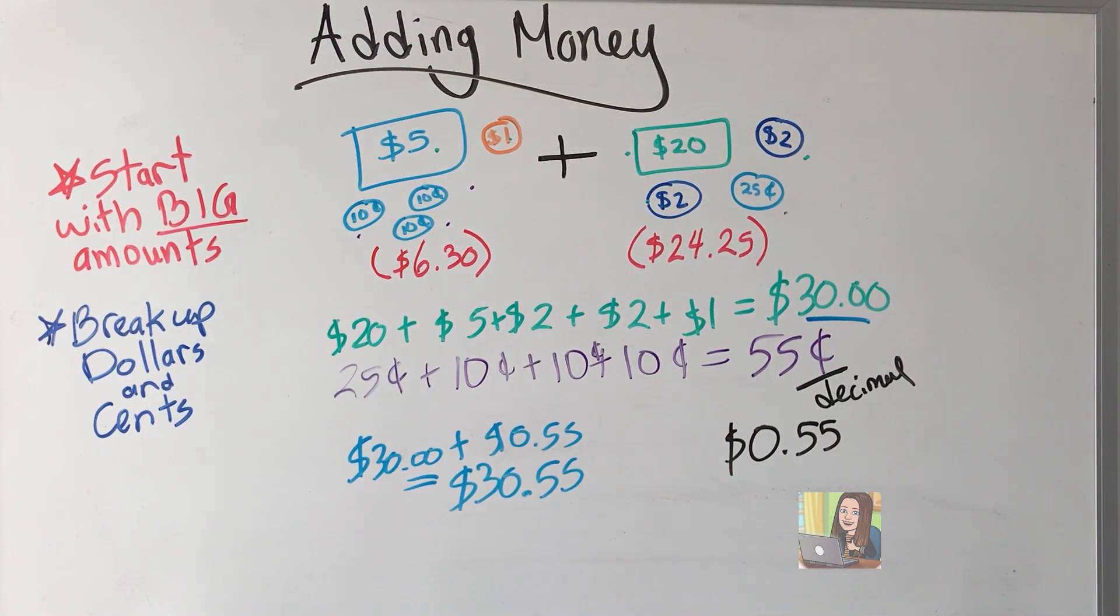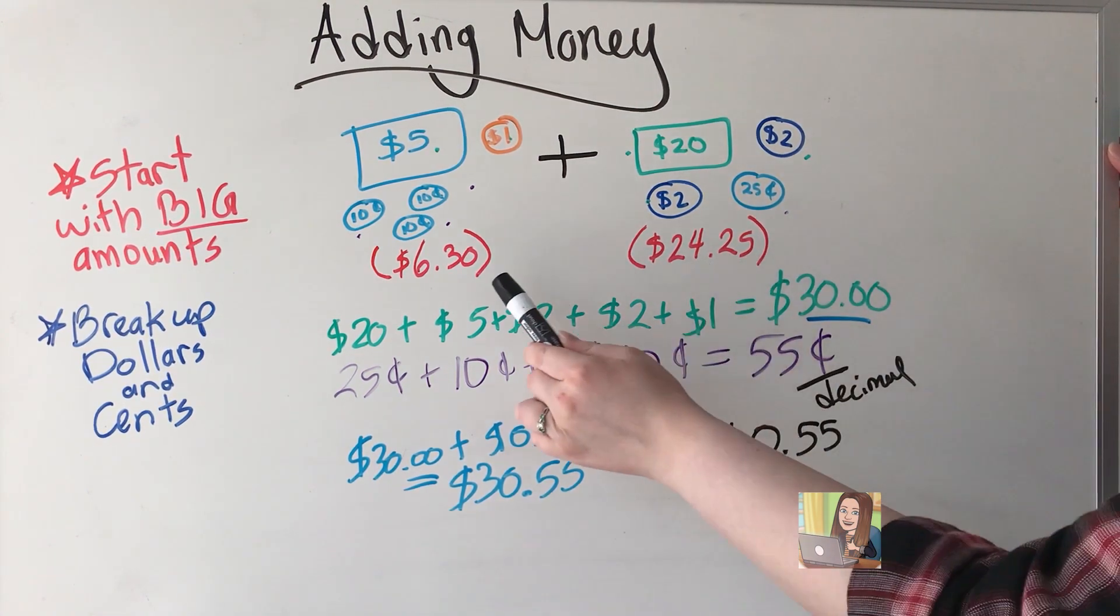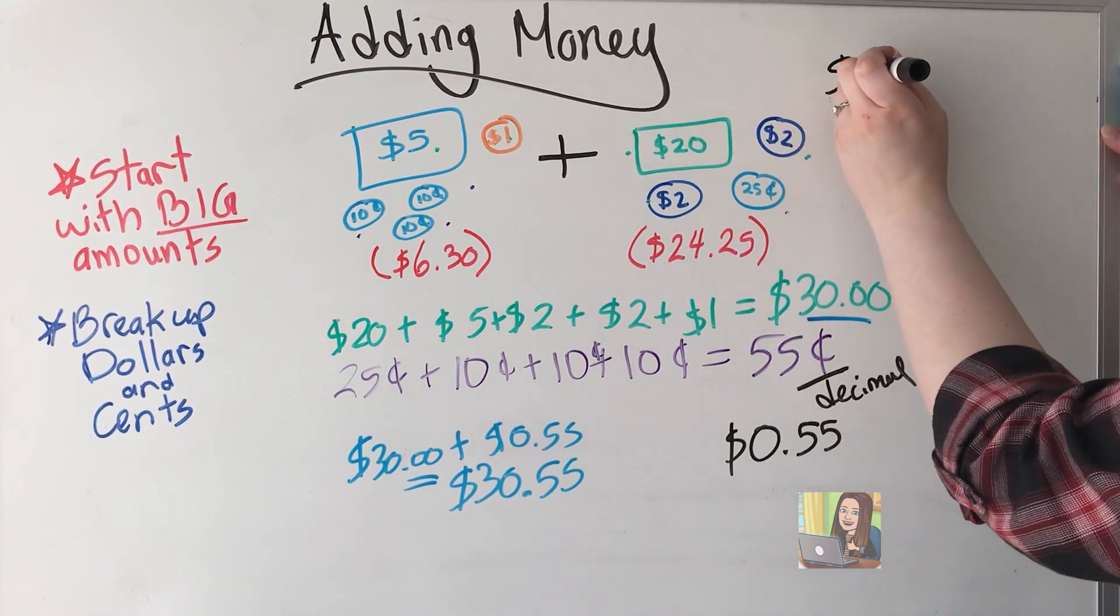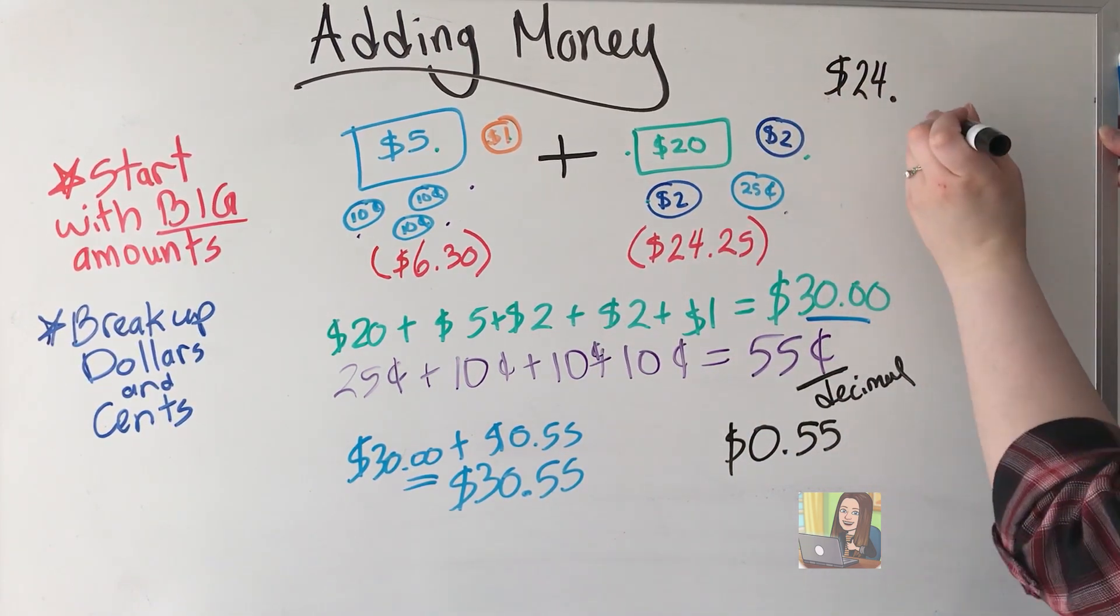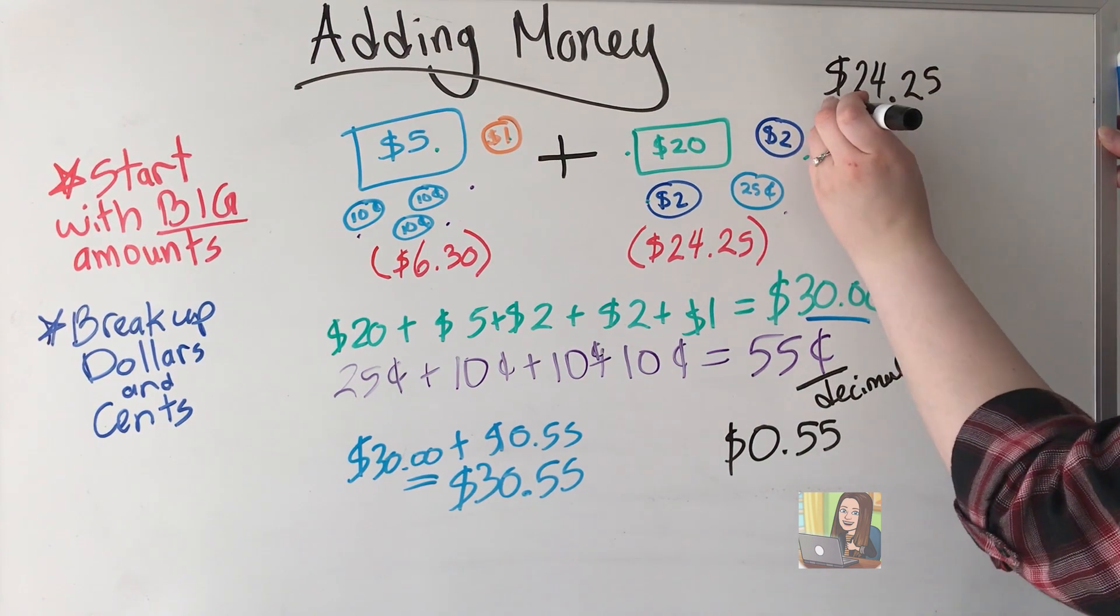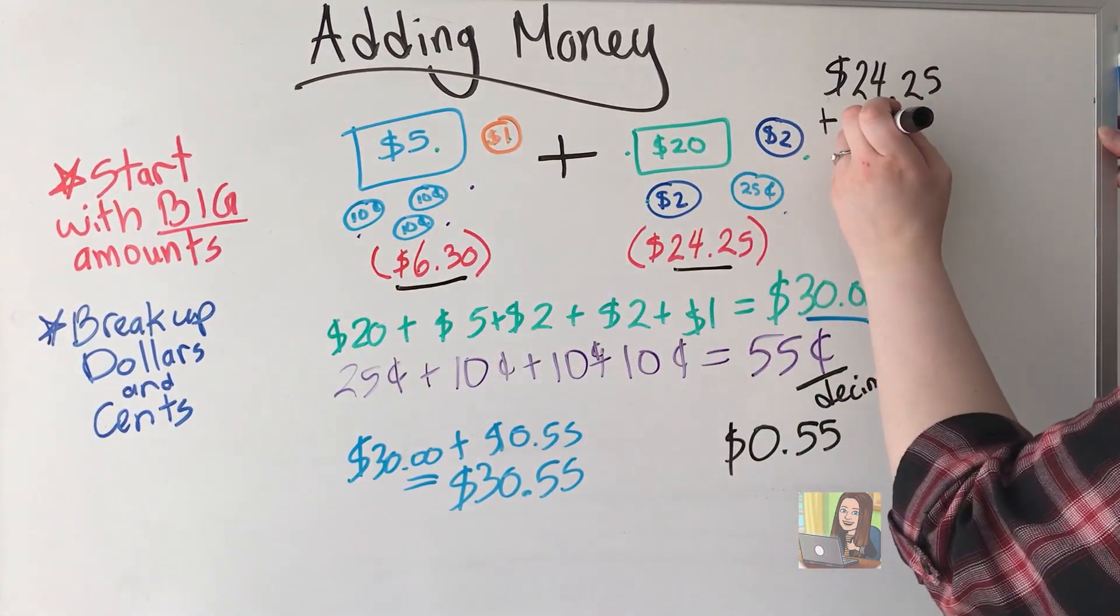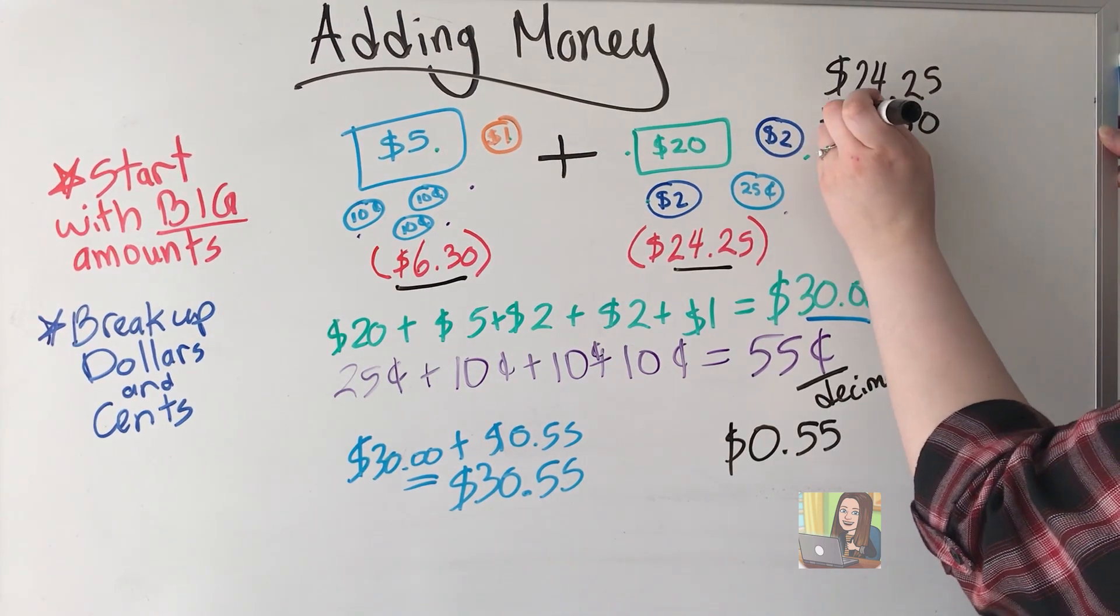Let's double check our work. Because I know a lot of us like to stack our amounts. So let's do that up here. I'm going back to my original amounts. So I'm going to put $24.25 plus $6.30.